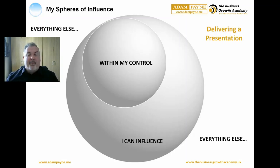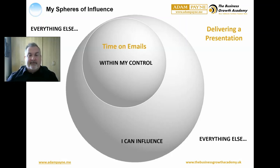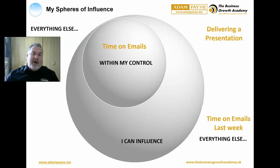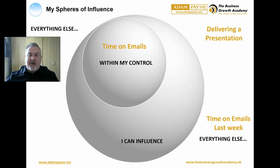A typical example might be that I'm delivering a presentation and I've spent too much time on my emails. That's in my control — because they're my emails, it's my inbox, so I can control how much time I'm spending on emails. However, how much time I spent on emails last week — if I'm worrying about that, it's in 'everything else.' I can't do anything about it, it's in the past.